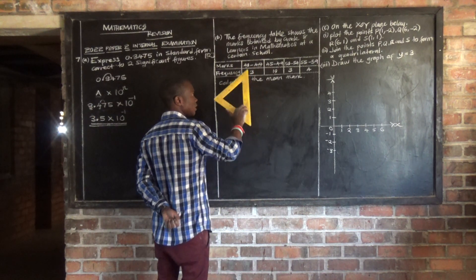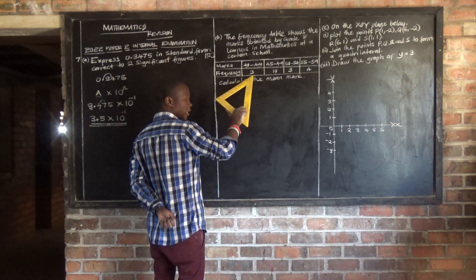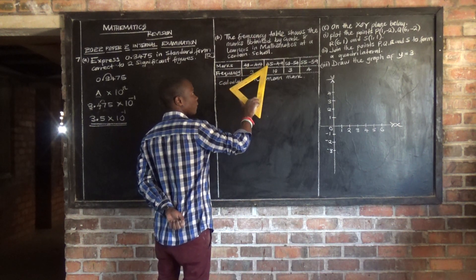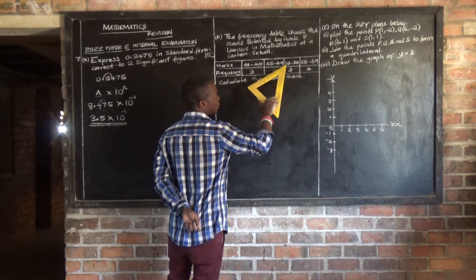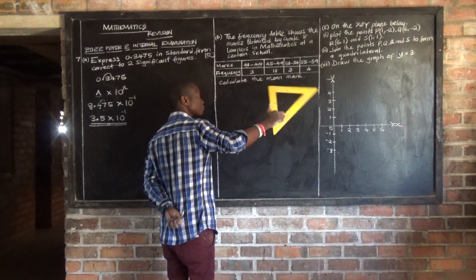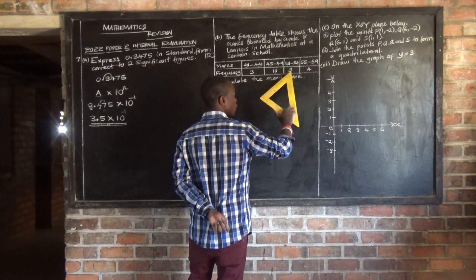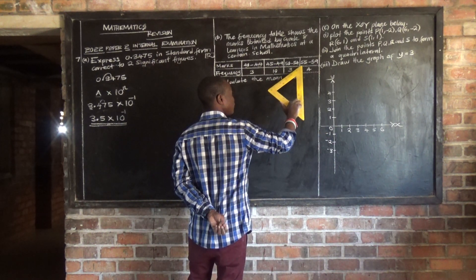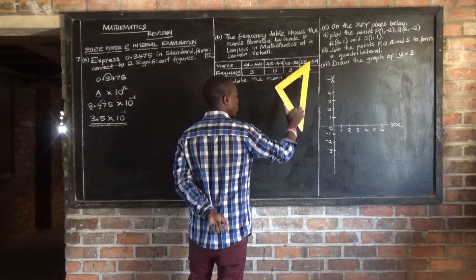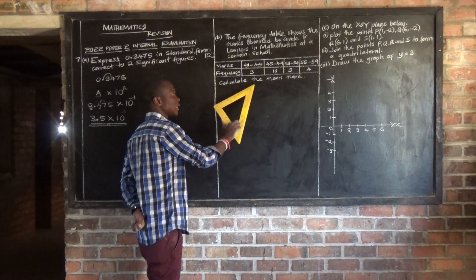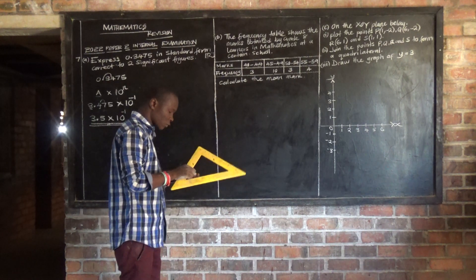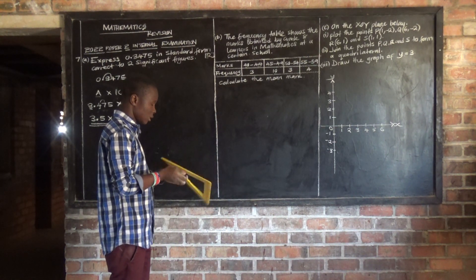So those who got 40 to 44, they were only 3. Those who got 45 to 49, they were only 10. Then we have 50 to 54, they were only 10. So the question is saying now, calculate the mean mark. They want us to find the mean mark.